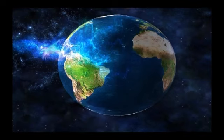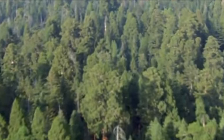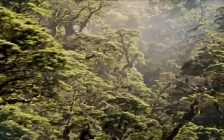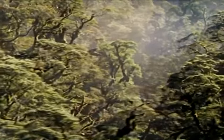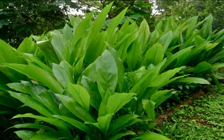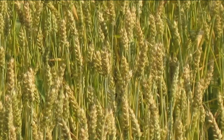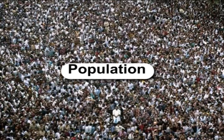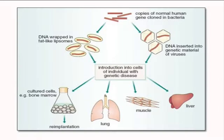The terms 'center of origin' and 'center of diversity' have been used interchangeably. Though the two concepts are related and highly intertwined, there is a distinction between the two. While the principle applies to all organisms, they are most often used in relation to plants, particularly in plant breeding and studies of crop domestication. The areas where origin or differentiation of a particular species took place are generally called centers of origin or gene centers.